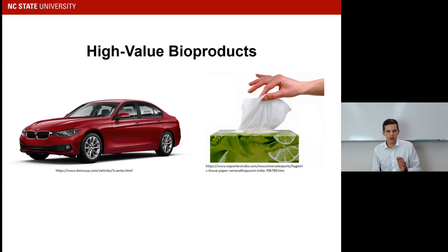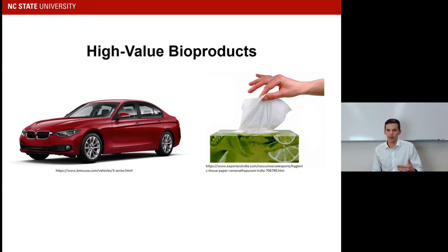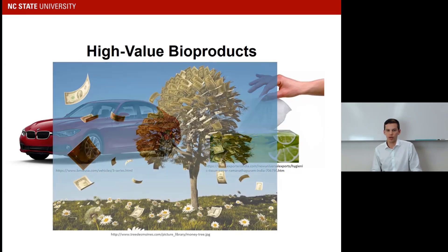Consider two different products: a BMW and the nicest tissues you can buy at the supermarket. Which one costs more on a weight basis? Surprisingly, the tissue product costs more per unit weight than a BMW — which is pretty exciting stuff. Literally, money can grow on trees.